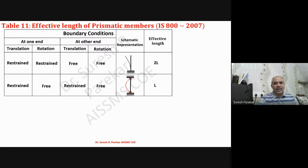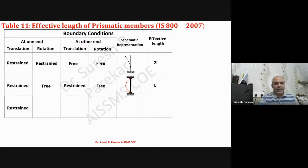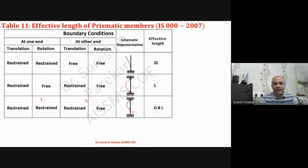For the fixed-free (cantilever) case, the effective length is 2L. For the second case, both ends have translation restraint and rotation free — that is, both ends are hinged. The effective length equals the unsupported length L. For the third case, one end is fixed (both restrained) and the other end is hinged (translation restrained, rotation free).